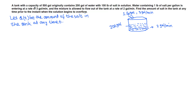A tank with a capacity of 500 gallons originally contains 200 gallons of water with 100 pounds of salt in solution. Water containing one pound of salt per gallon is entering at a rate of three gallons per minute, and the well-stirred mixture is allowed to flow out of the tank at the rate of two gallons per minute. Find the amount of salt in the tank at any time prior to the instant when the solution begins to overflow.